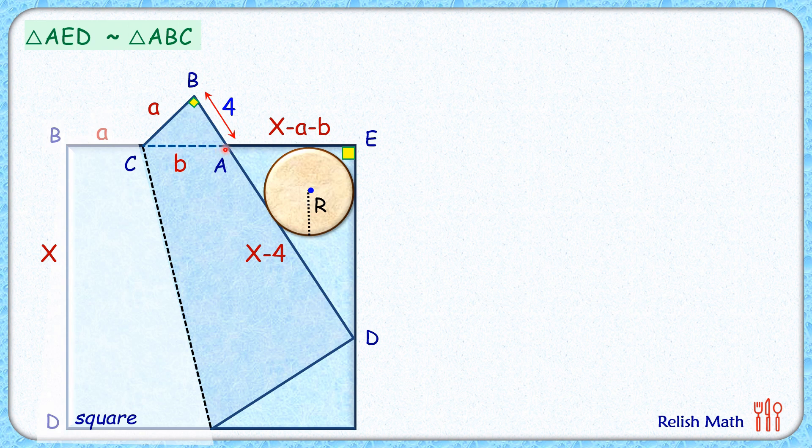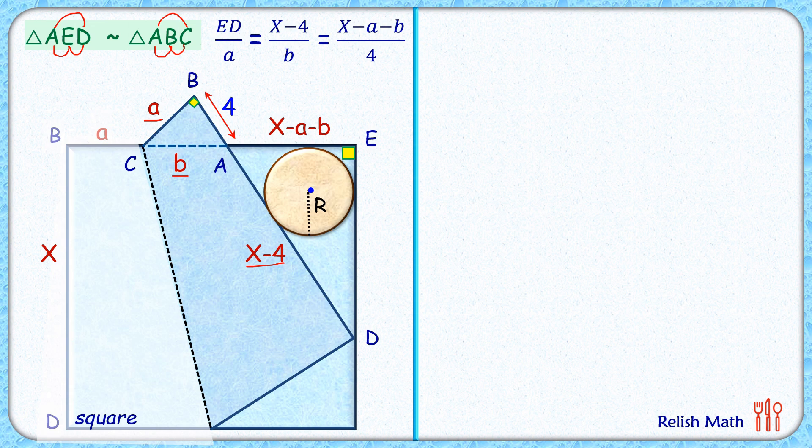We can say that ED upon BC, and BC is your a, so ED upon a equals AD upon AC. AD is x - 4 and AC is b, so (x - 4) / b equals AE upon AB, so (x - a - b) / 4. We'll solve these two equations.